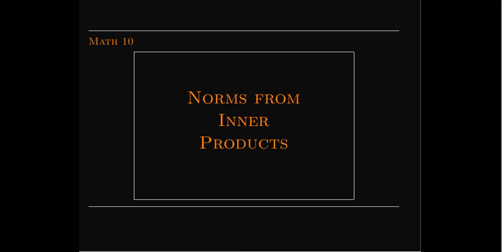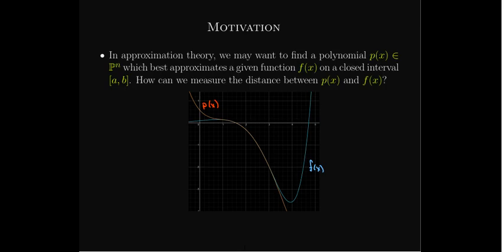In this short video, we're going to talk about how you can get a norm from a general inner product. We talked about inner products because the dot product was so useful in measuring lengths and angles, and we'd like to be able to do that in vector spaces where the vectors themselves are more general objects like functions or matrices.